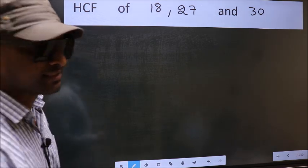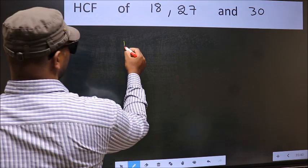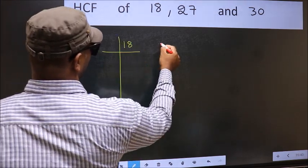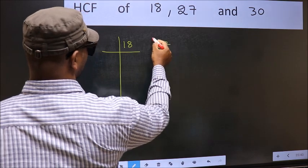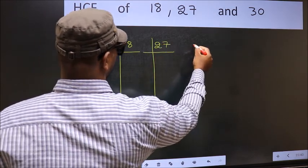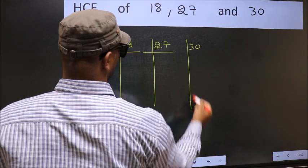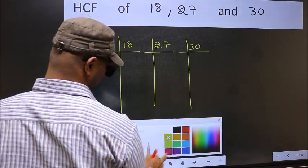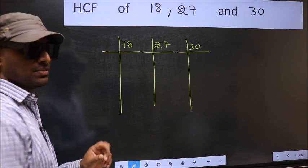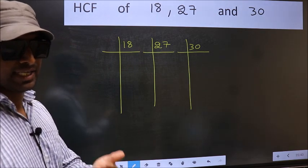What I mean is 18, 27, 30. This is your step 1. Next.